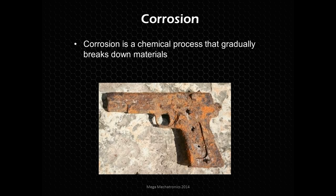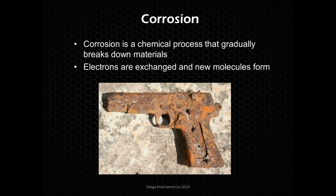Corrosion is the chemical process that gradually breaks down materials, where electrons are exchanged and new molecules are formed. There are a lot of different classifications of corrosion, including things like erosion, but we're going to focus on these chemical processes.